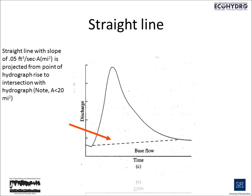The straight line approach is another way of doing this. Here we estimate the base flow amount by looking at a line projected from the point of the hydrograph rise to its intersection with the hydrograph, using a slope of 0.05 cubic feet per second times the area of the watershed in square miles. This represents the rate of change of base flow from the time of rise to some point later on where this line intersects the hydrograph. This approach is really only applicable when the area of the watershed is equal to or less than 20 square miles.